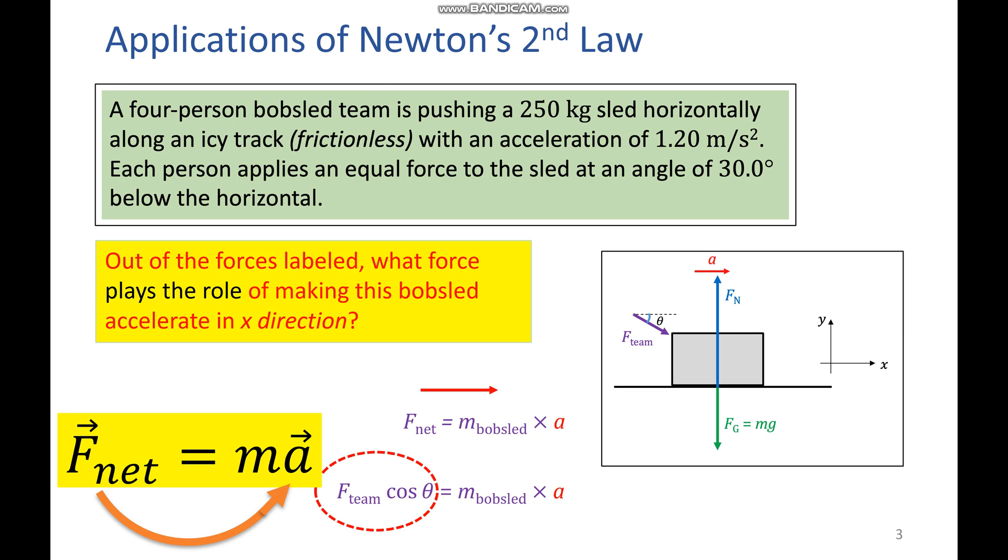So we're going to take a look at an example using it. A four person bobsled team is pushing a 250 kg sled horizontally along an icy track, which is frictionless and has an acceleration of 1.2 meters per second squared.